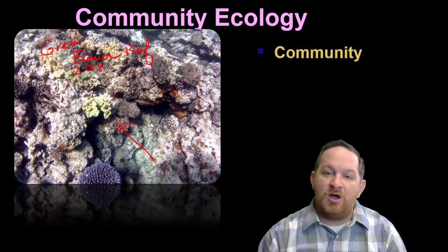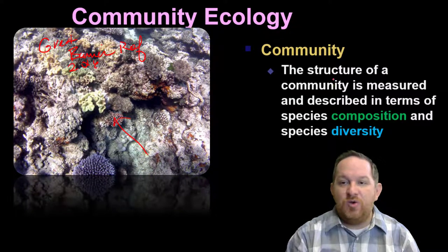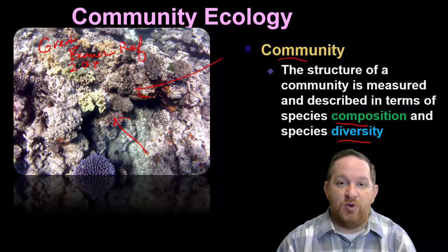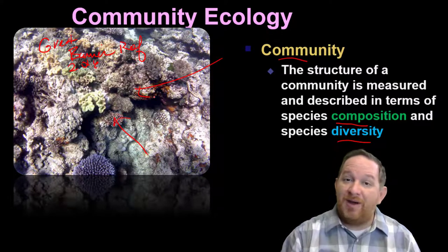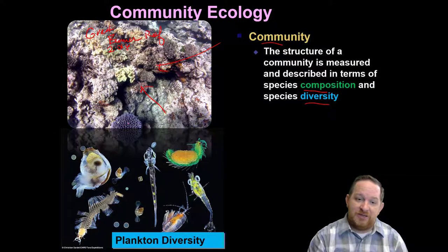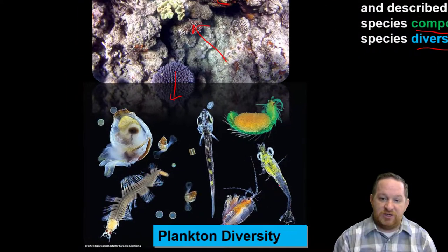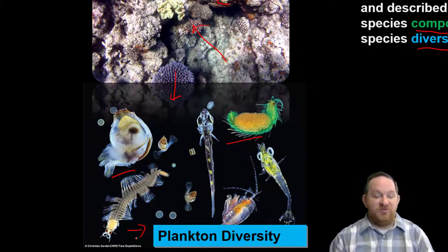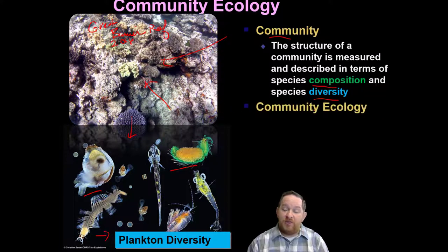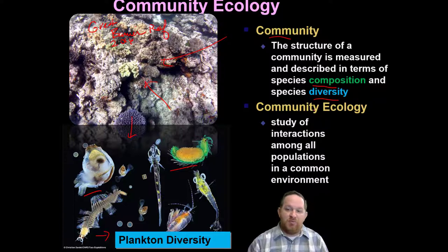In this video, I want to talk about what makes up a community. We talk about communities in terms of their composition and diversity. This particular community at the Great Barrier Reef was composed of a lot of coral and some fish. For diversity, I would have had to look at different species to count it. In water, we'd see a lot of plankton diversity — look at these crazy creatures. There's an incredible amount of diversity in the plankton community and many marine ecosystems.